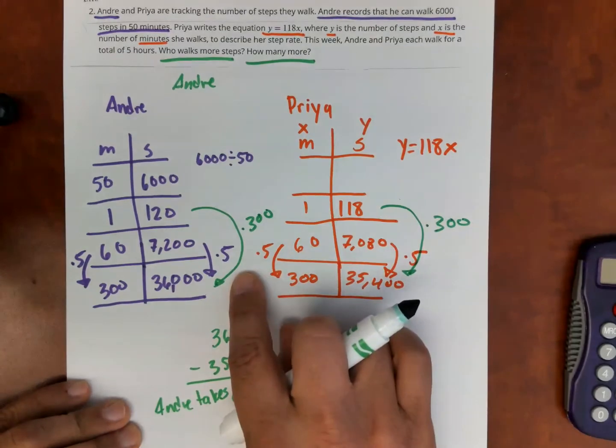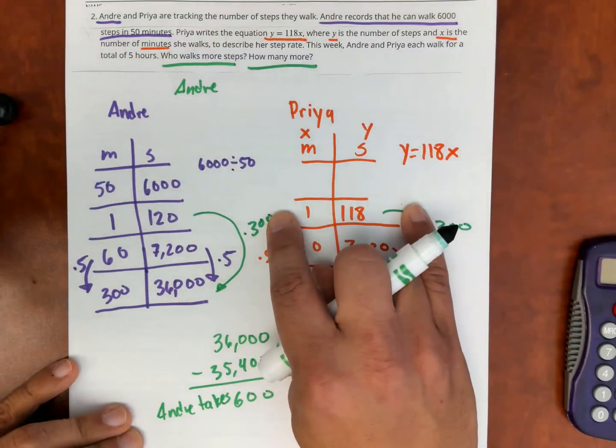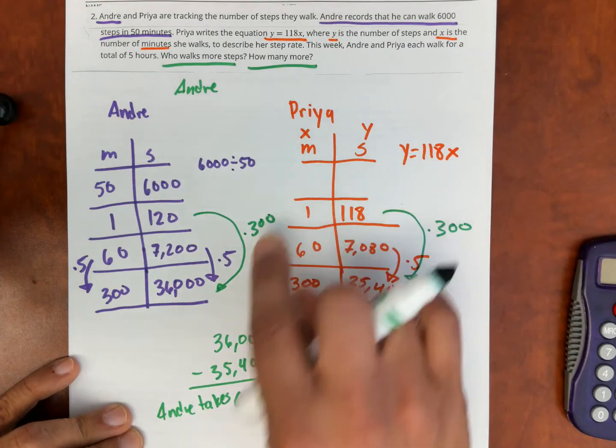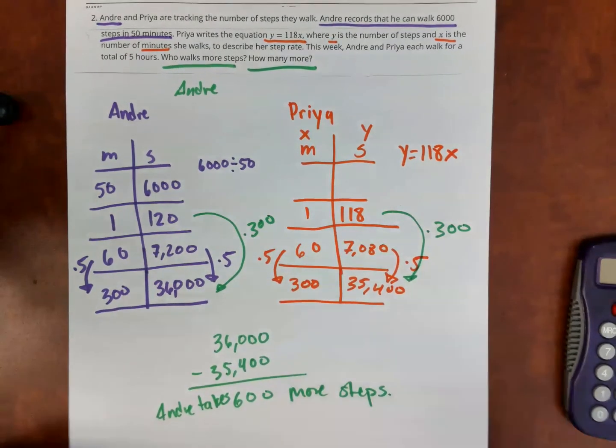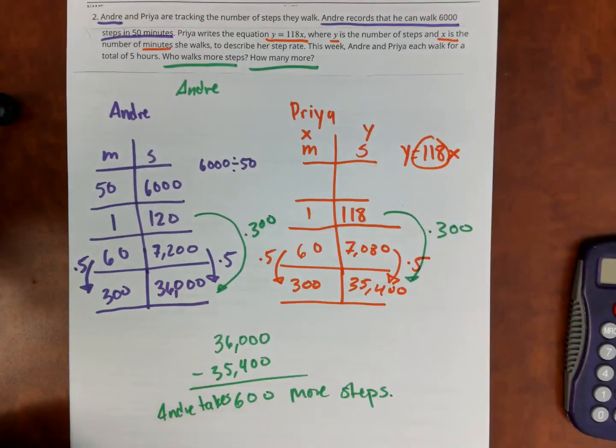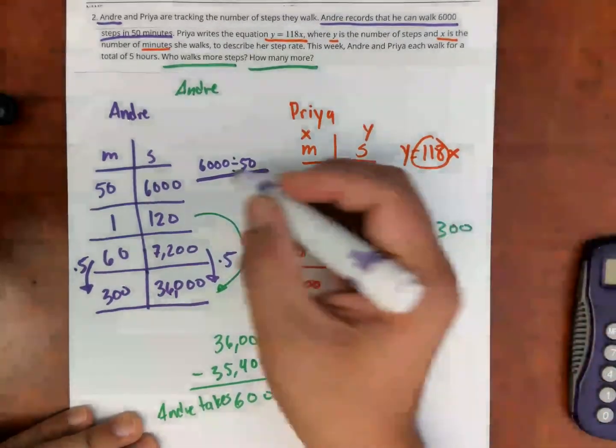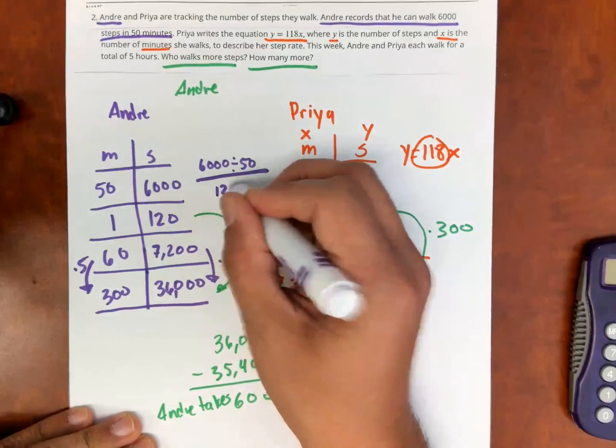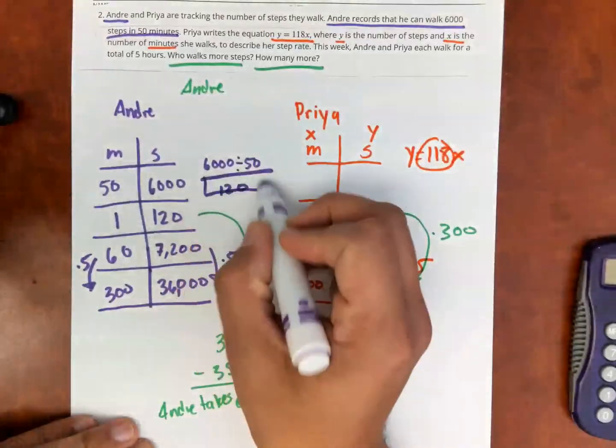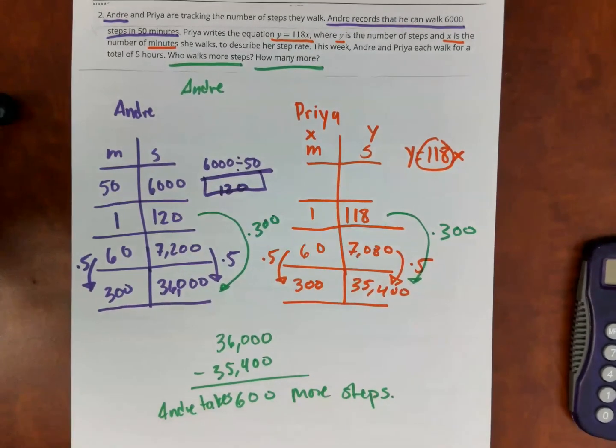That's the importance of finding the unit rate or finding the rate of change for each one for Priya. You see the rate of change in the equation that's that number right there for Andre. What we had to do is we had to do this division 6,000 divided by 50 is 120. That's the rate of change. And then we use that to fill in the rest of the table. All right, ladies and gentlemen, thank you very much.